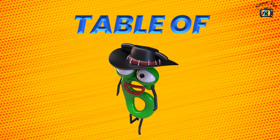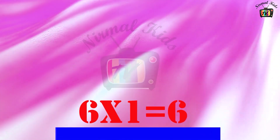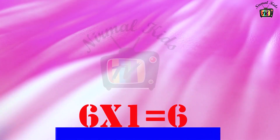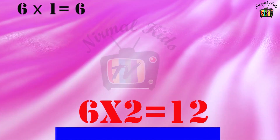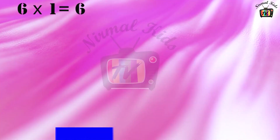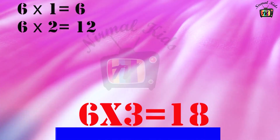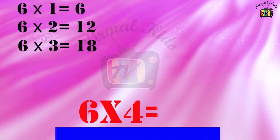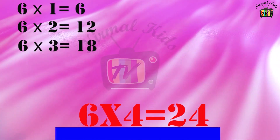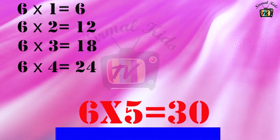Table of 6. 6 1's are 6. 6 2's are 12. 6 3's are 18. 6 4's are 24. 6 5's are 30.